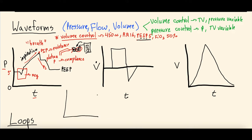The next waveform is flow — that V with the dot over it — the flow-time waveform, again under volume control. What we see here is a box shape. You start at zero flow — there's no flow baseline like there is a PEEP baseline for pressure. You get inspiration on top: the flow shoots up to push in the set volume.